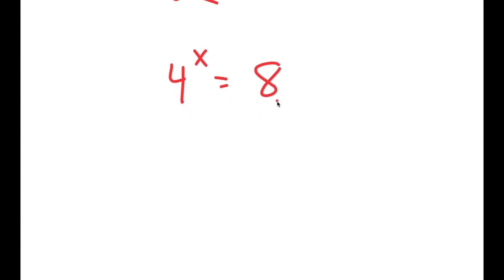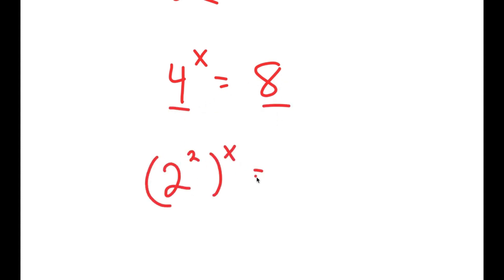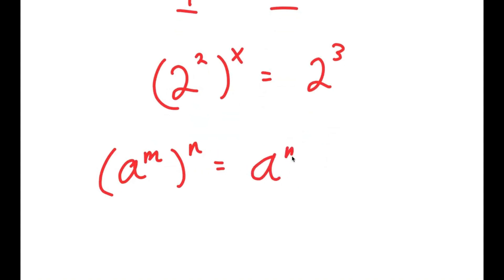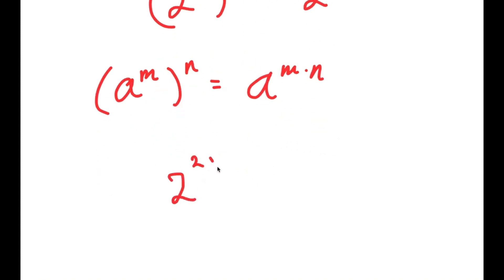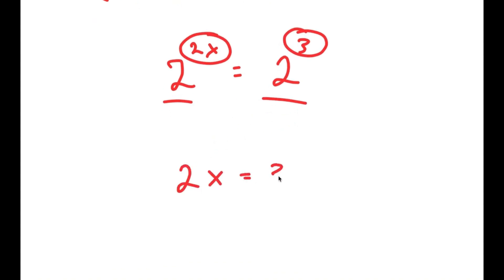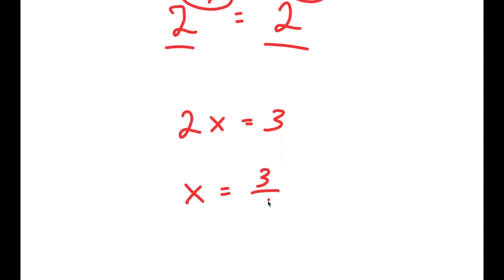From here, we have a more simplified equation. To solve this, I'm going to make these two bases the same. So 4 is the same thing as 2 squared, and 8 is the same thing as 2 to the power of 3. And if I have something in the form a to the power of m to the power of n, this is equal to a to the power of m times n. So 2 to the power of 2 to the power of x is going to equal 2 to the power of 2x. So I get 2 to the power of 2x is equal to 2 to the power of 3. And because these two have the same bases, the exponents are equal to each other. So 2x is equal to 3, and x is equal to 3 over 2.